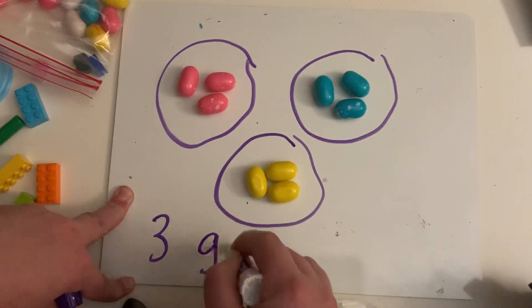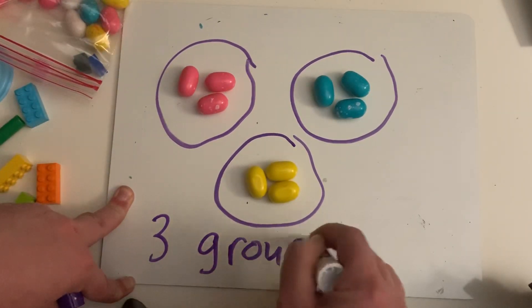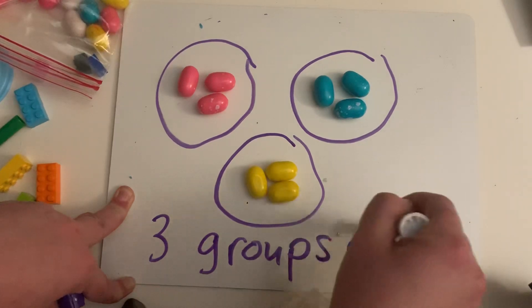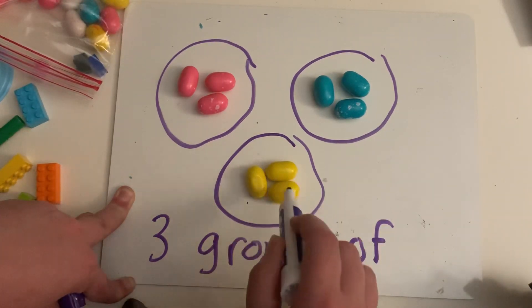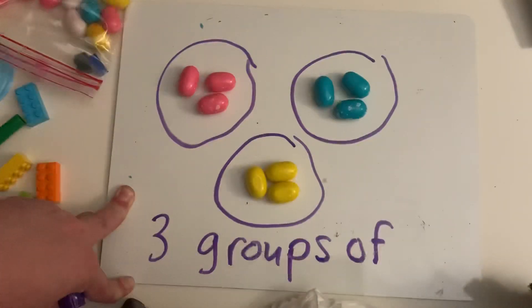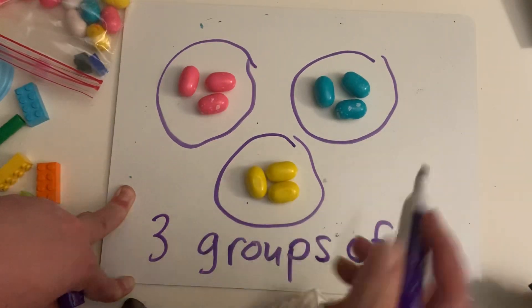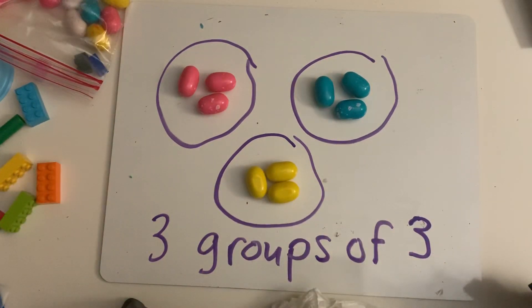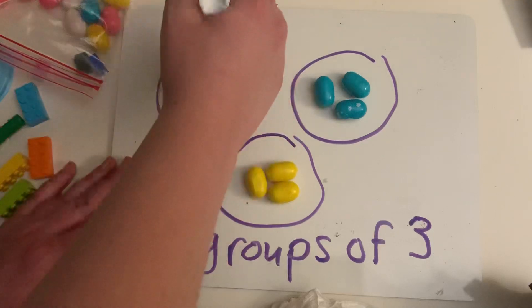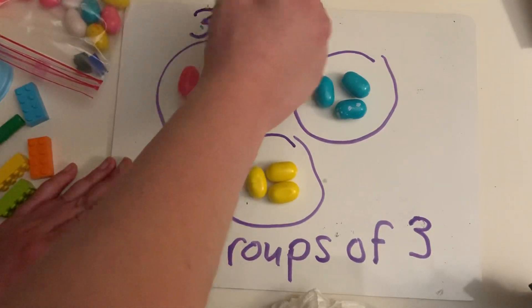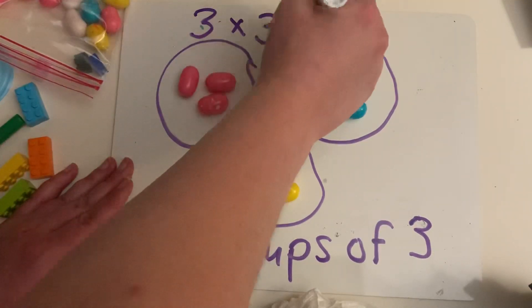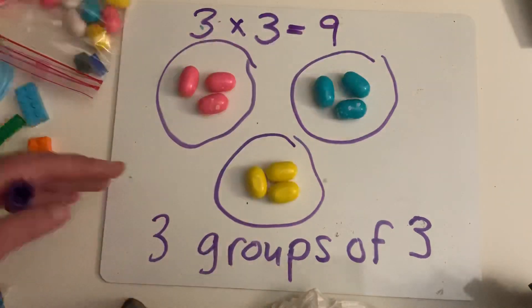I have three groups of one, two, three. I have three groups of three pieces of bubblegum. So our multiplication would be three times three equals nine.